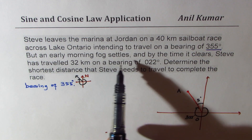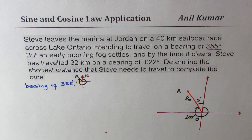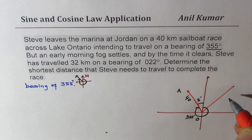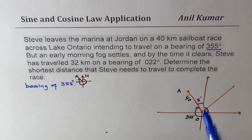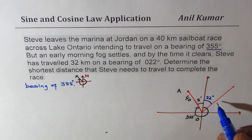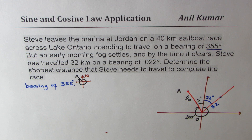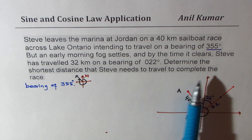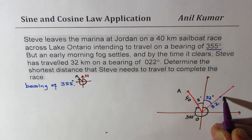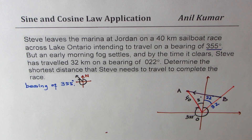But an early morning fog settles and by the time it clears, Steve has traveled 32 kilometers on a bearing of 22 degrees. So 22 will be on this side. We draw that path — 22 degrees and 32 kilometers, so it's shorter. Let's put a point here and say this is 32 kilometers. We need to find how much Steve needs to travel to complete the race. The distance he has to travel is from here to there — he reaches point B, and now he has to go back to A. So we need to find AB.